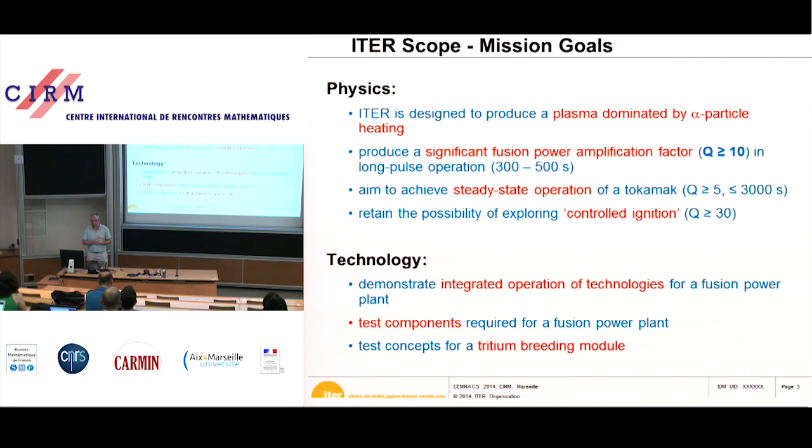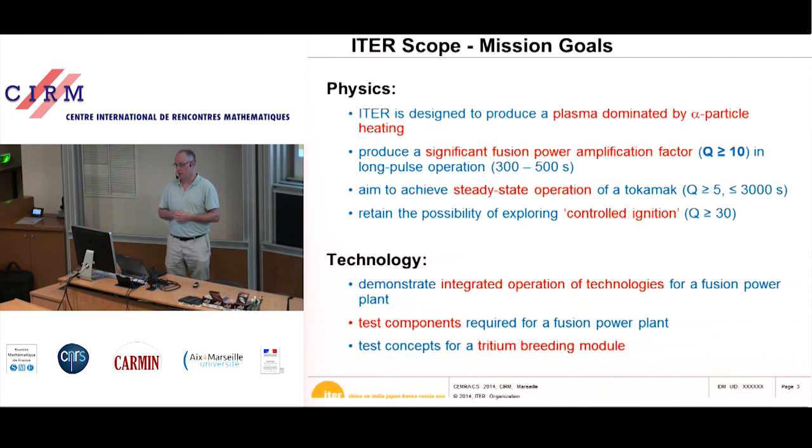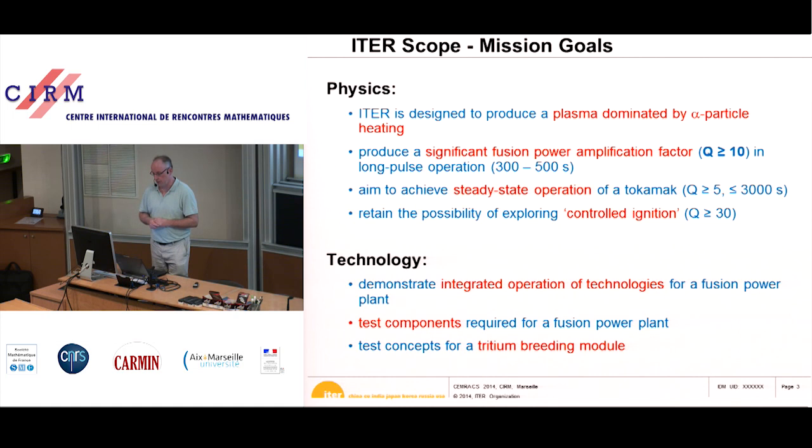The mission goals of ITER — why do we build the machine? It is the first machine supposed to actually amplify the energy you put in by a factor of 10, so it should produce energy. It will not produce electricity, just energy. The aim is to do that for a time of about 300 to 500 seconds in the initial phase. In a later stage, after 2030 or so, the aim is to do that in steady state and produce an amplification factor of 5.